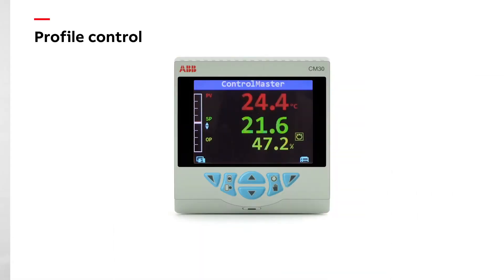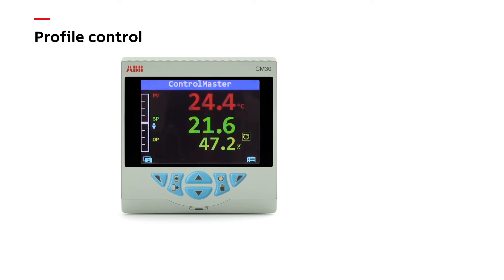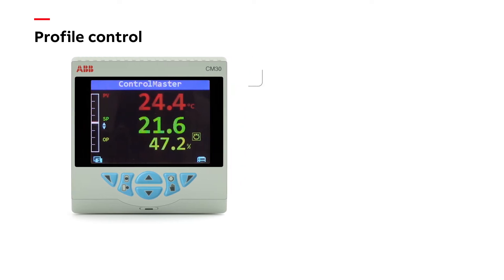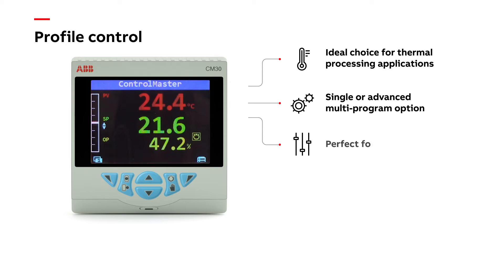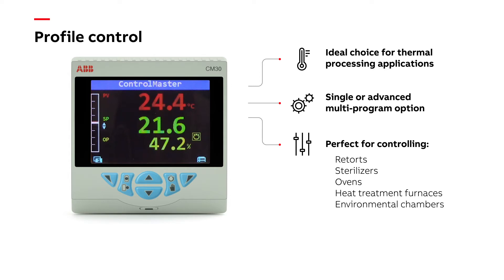The ControlMaster's Profile Control option makes it the ideal choice for thermal processing applications. Available as either a simple single program version or with advanced multi-program capability, it is perfect for controlling retorts, sterilizers, ovens, heat treatment furnaces, environmental chambers, and autoclaves.